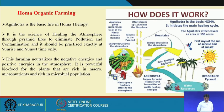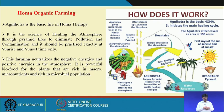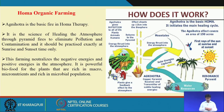Homa organic farming, also called Agnihotra farming, is another type. As we know, the homa is performed in every home during occasions and puja celebrations. This concept is of Indian origin. It involves performing a homa in a crop field using a copper pyramid plate. It is the science of healing the atmosphere through pyramid fires to eliminate pollution and contamination, practiced exactly at sunrise and sunset.